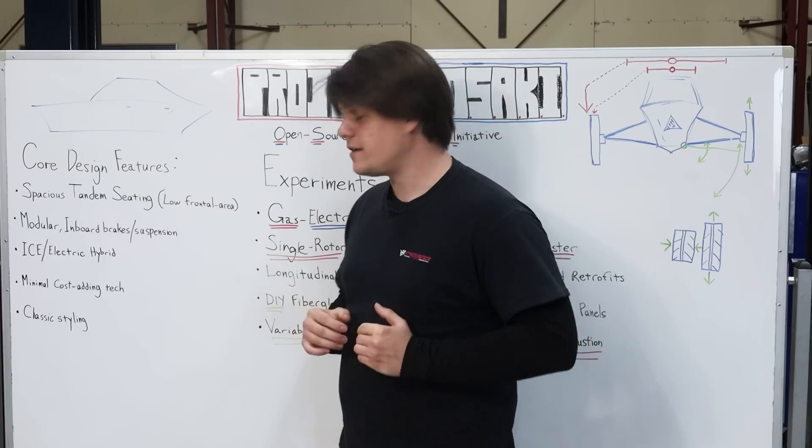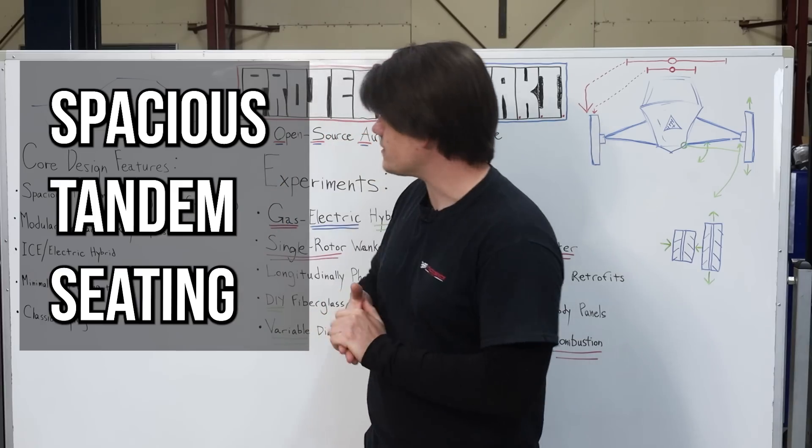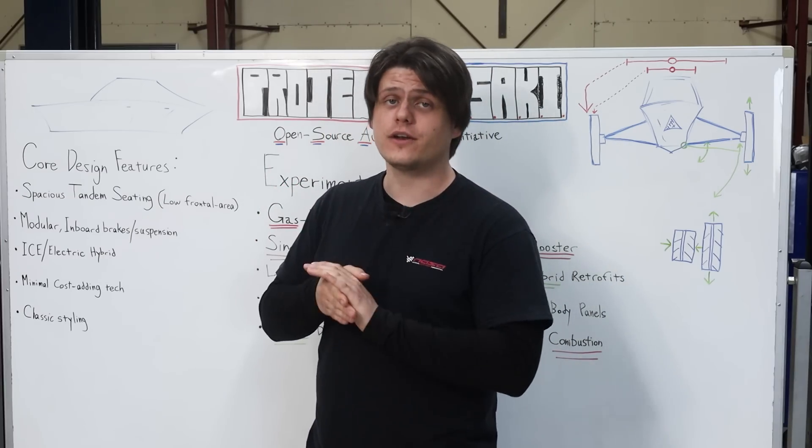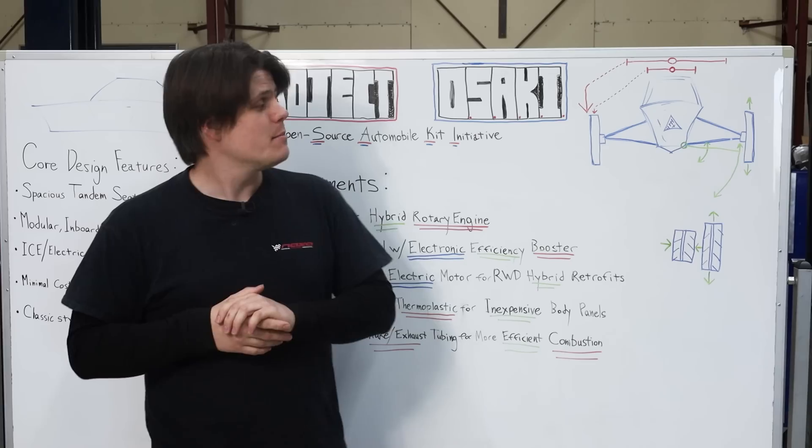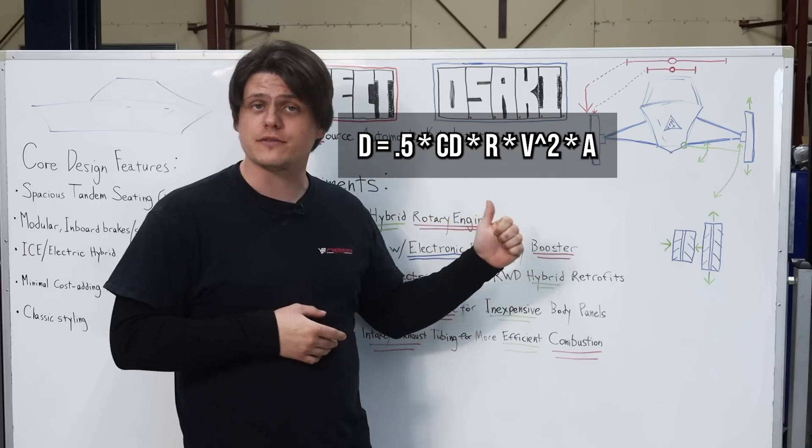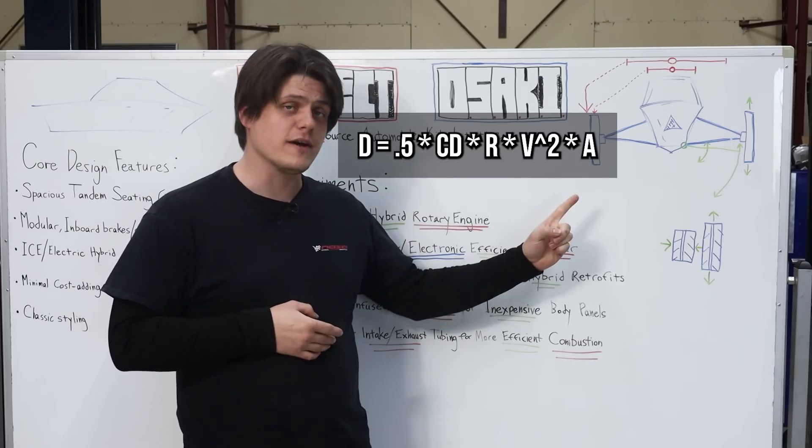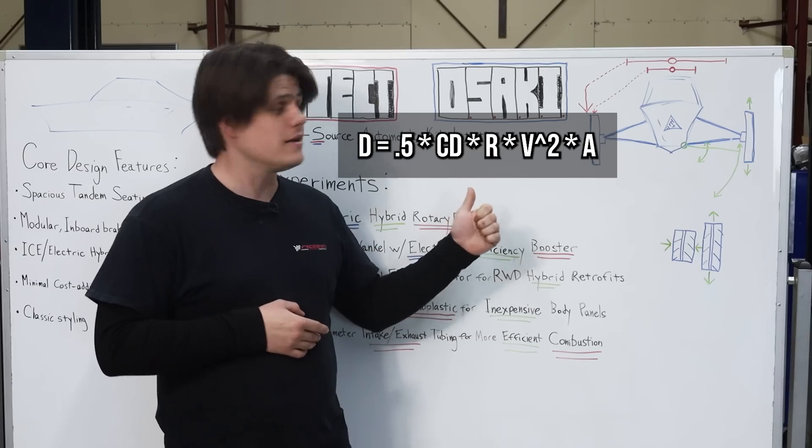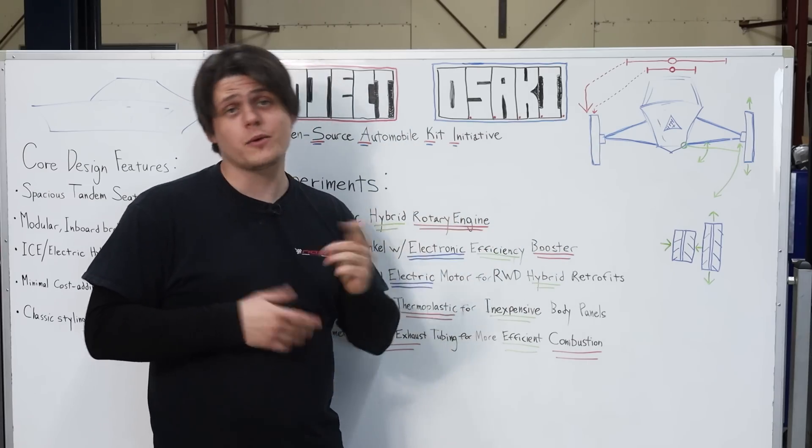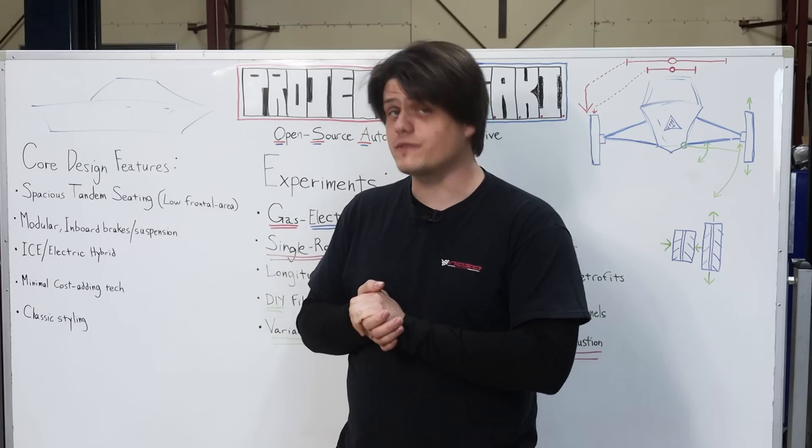So the first core design feature we're talking about today is spacious tandem seating. We're going to make this car as skinny as possible, reducing the frontal area as much as we can, because according to this formula, which calculates the total drag of a vehicle, it's actually more effective to reduce the frontal area than it is to lower the CD. So it's more effective to make it skinny than it is to make it slippery, but we're going to do both anyways, which will result in a pretty fuel efficient vehicle, I believe.